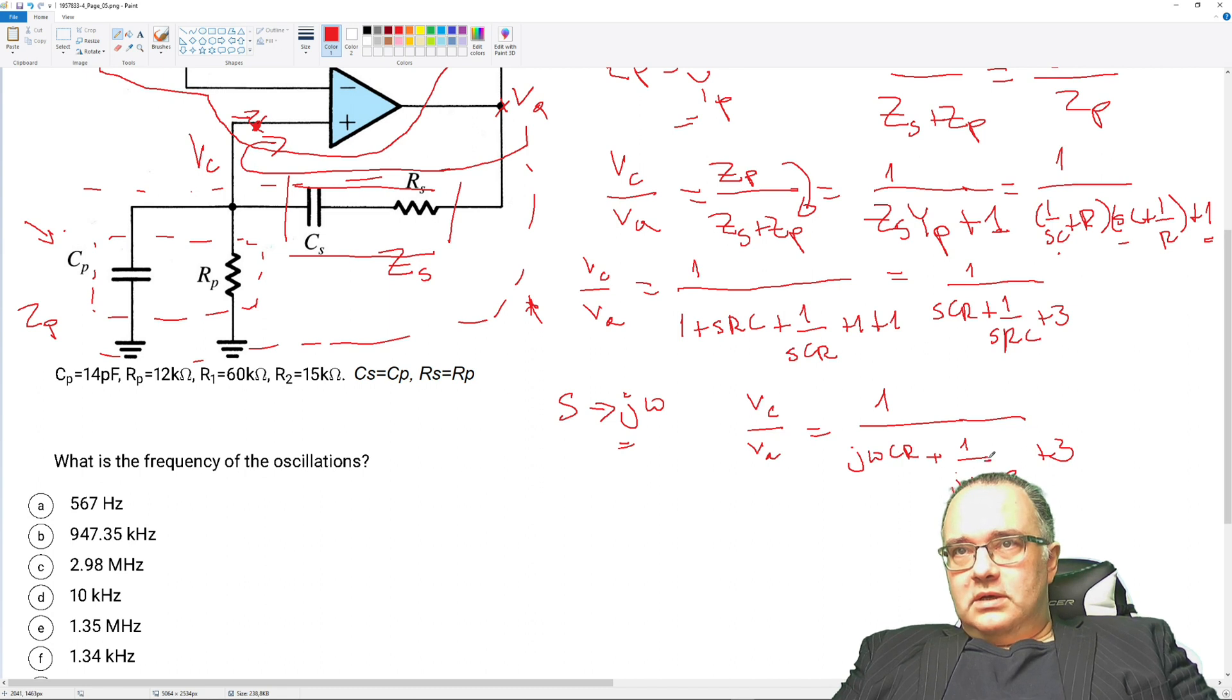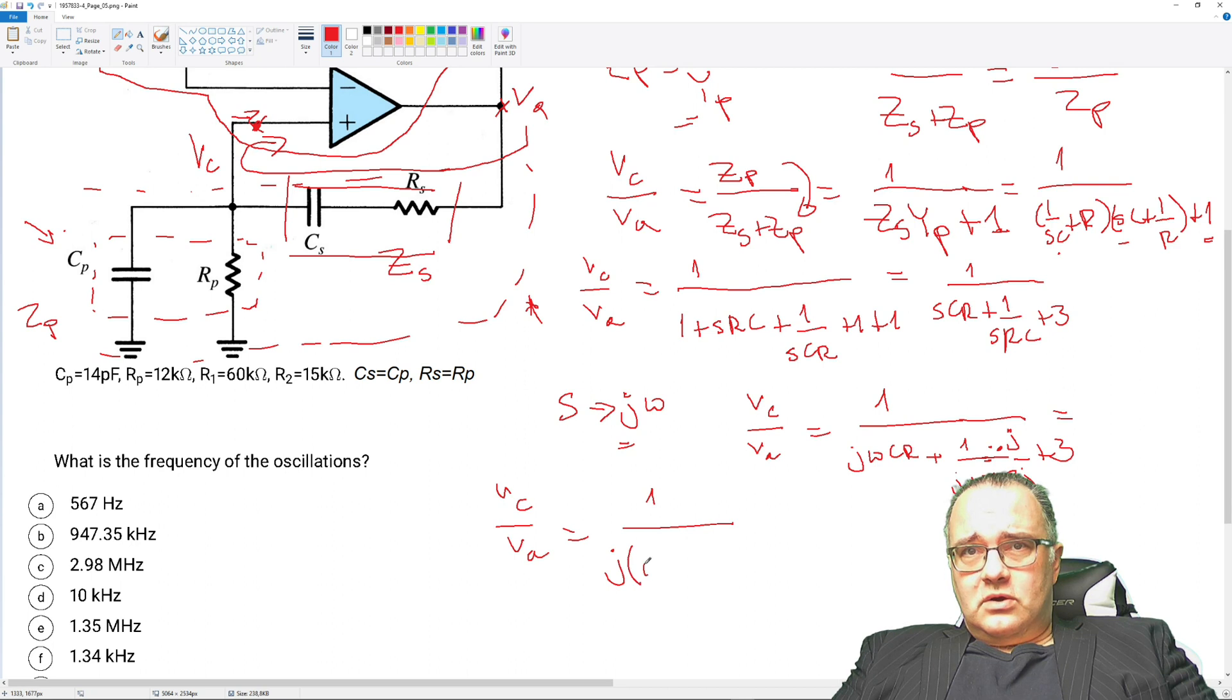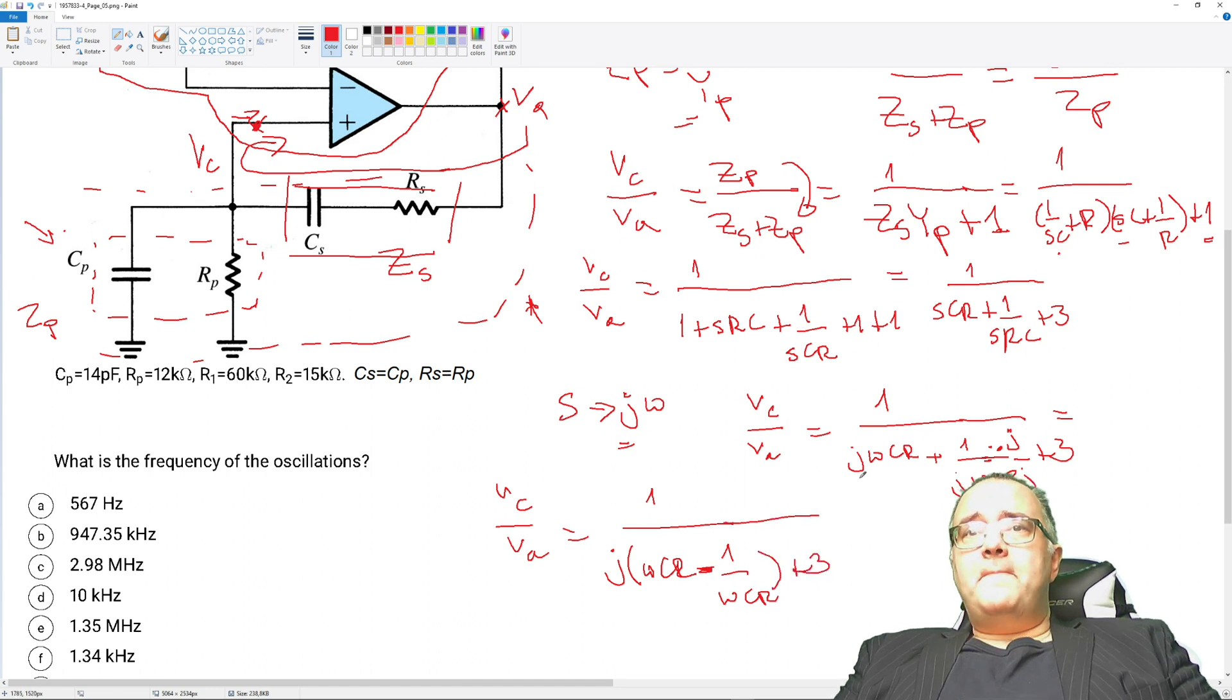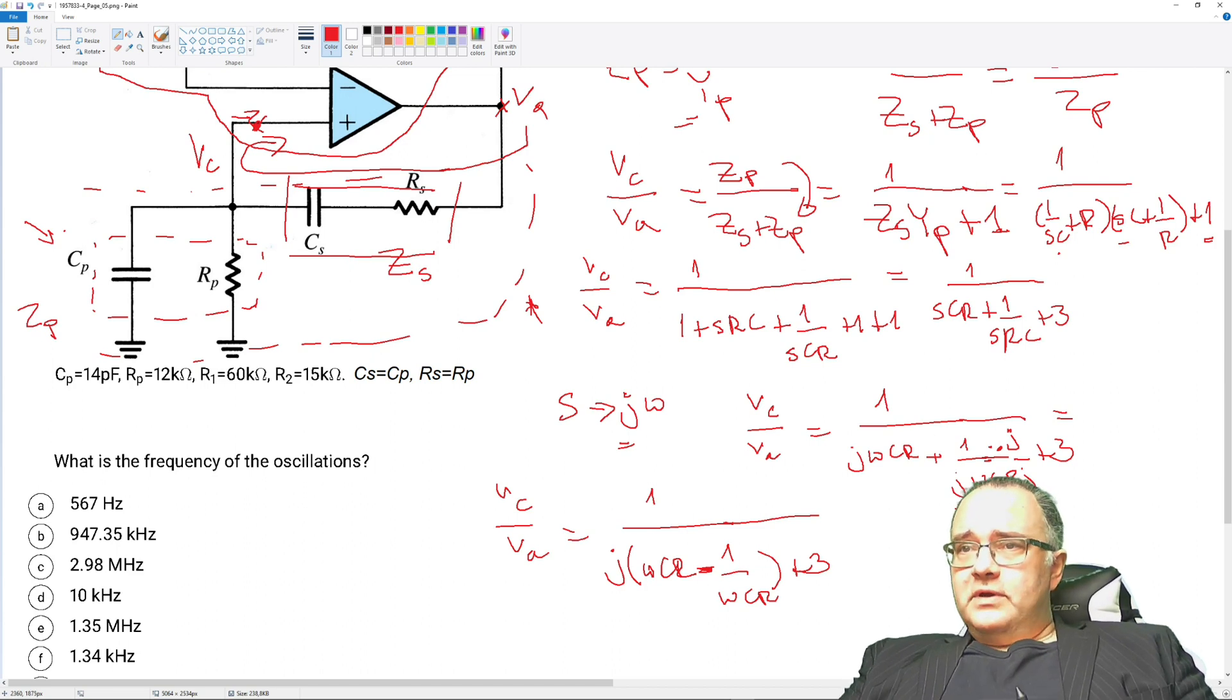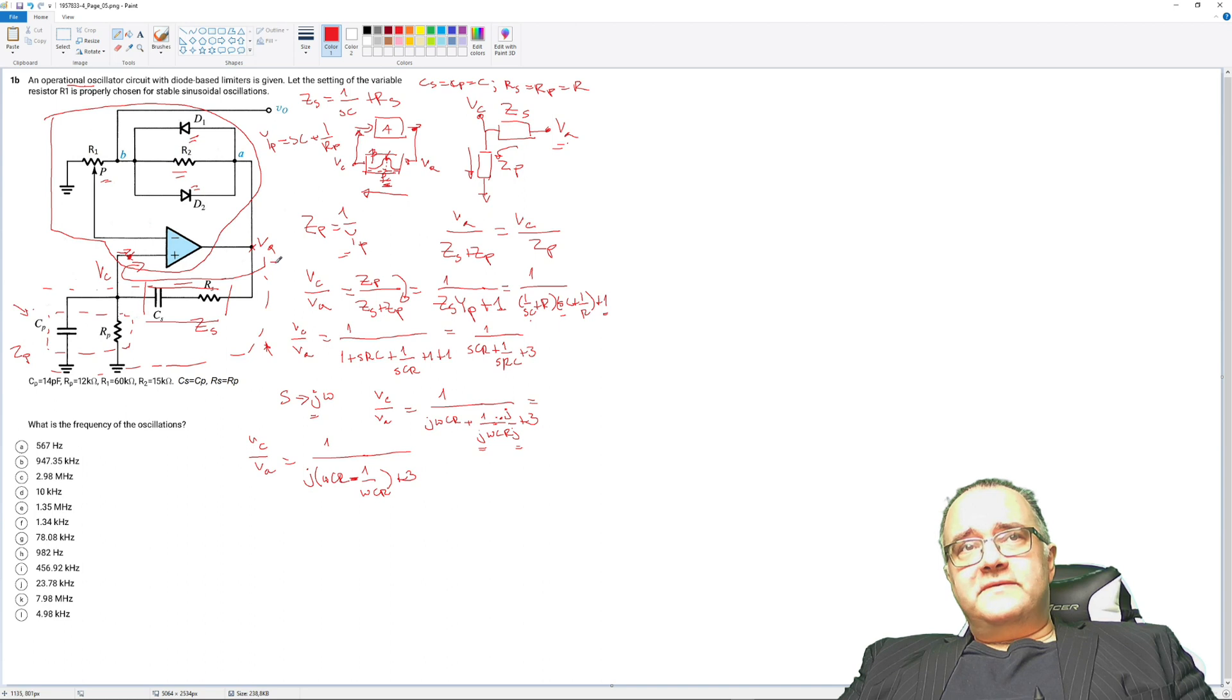So here we need to rework it a little bit. We multiply by j divided by j so that we have now VC/VA is j times j times j will be minus. So will be jωCR minus because of these two j's, 1 over ωCR and then plus 3. Now as I said for the frequency of oscillation we need that the transfer of the bandpass filter is real. And this means that the imaginary part which is this must be 0.